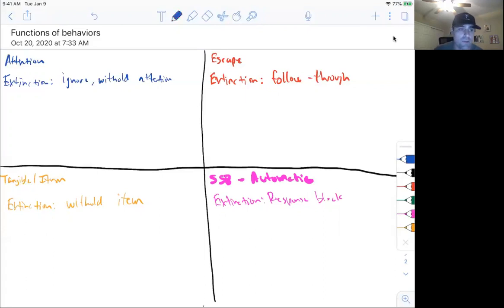So again, don't make it more complicated than it is. You need to know these four functions: attention, escape, tangible, self-stimulation.